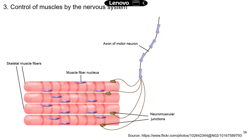All right, so we're going to continue on muscles. This slide is about the control of muscles by the nervous system. We have covered this previously for the T6 video, but the sound wasn't very good, so let me just go over this real quick.